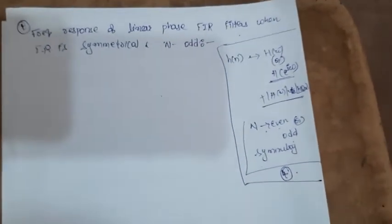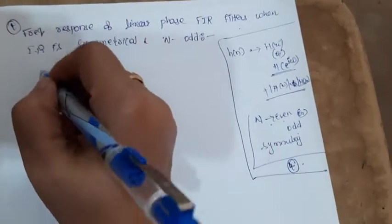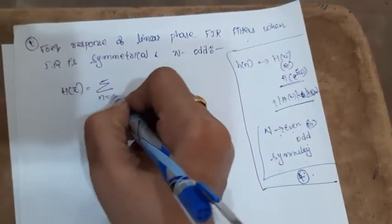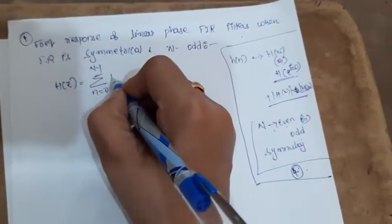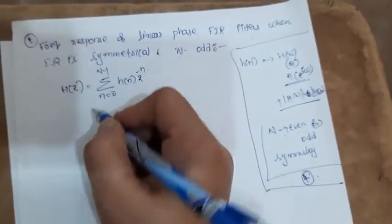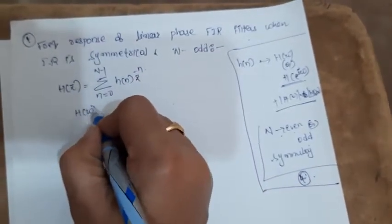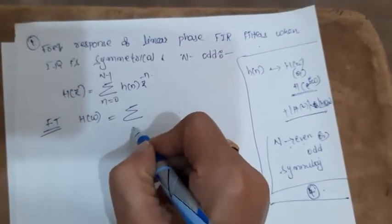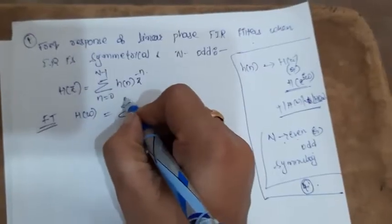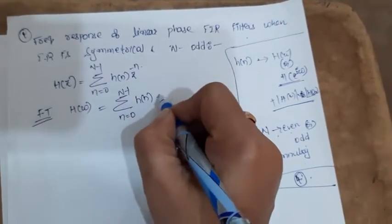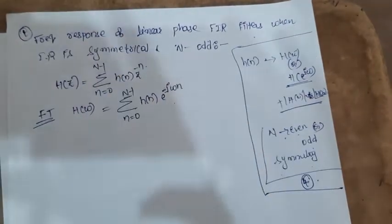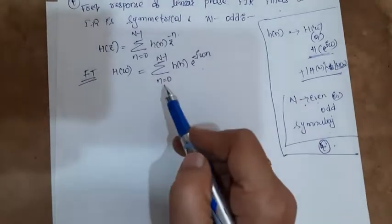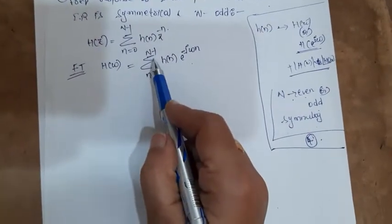What is the transfer function of an FIR filter? Writing directly: the transfer function is the summation from n=0 to N-1 of h(n)·z^(-n). Taking the Fourier transform, H(ω) or H(e^jω) is the summation from n=0 to N-1 of h(n)·e^(-jωn), because it is a finite impulse response with a finite number of non-zero terms.